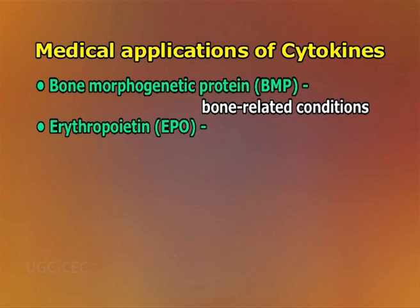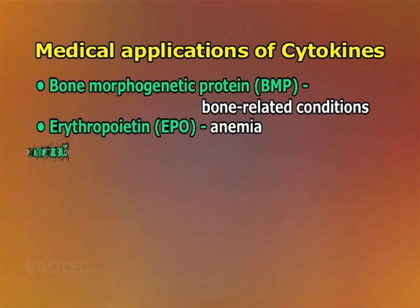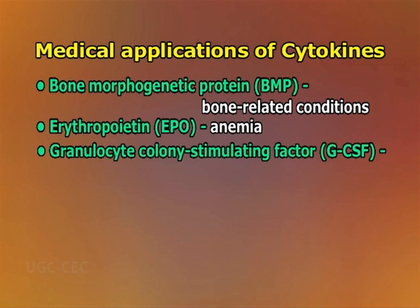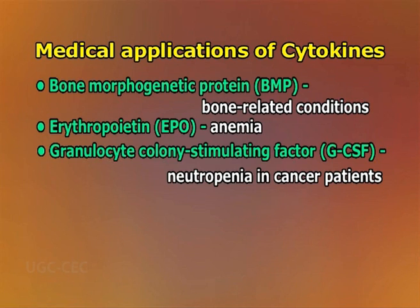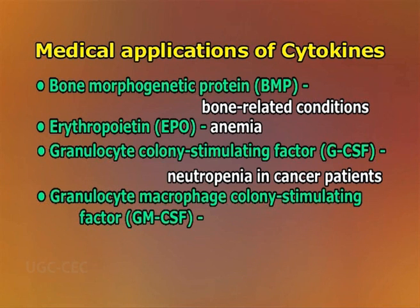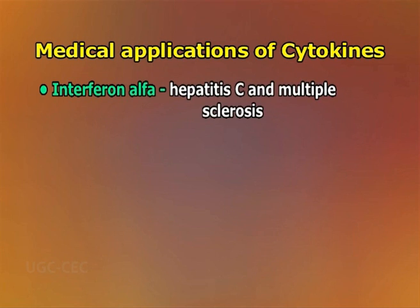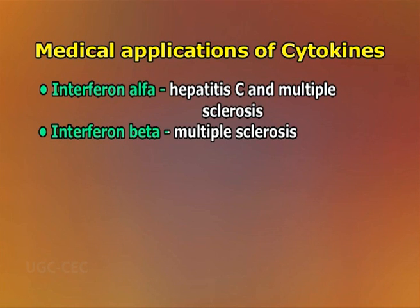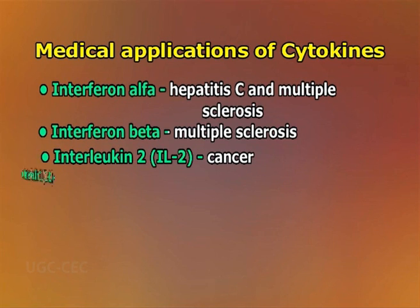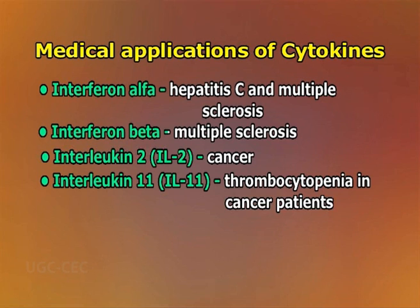Additional recombinant cytokines used as drugs include: granulocyte macrophage colony stimulating factor (GM-CSF), used to treat neutropenia and fungal infections in cancer patients; interferon alpha, used to treat hepatitis C and multiple sclerosis; interferon beta, used to treat multiple sclerosis; interleukin 2 (IL-2), used to treat cancer; and interleukin 11 (IL-11), used to treat thrombocytopenia in cancer patients.